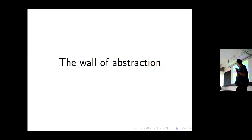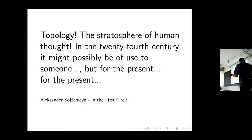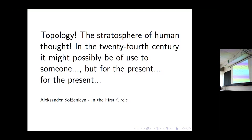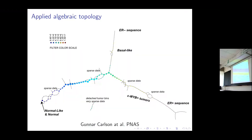I think I need to speak for a few more minutes. When you speak to an applied person, you need to cross a few walls. The first of them is the wall of abstraction. I'm not saying it's not necessary — it is by all means necessary — but we need to communicate. There is the standard quote from Solzhenitsyn, who besides being a famous writer who spent much of his life in the Soviet Gulag, was also a mathematician and topologist. Even topologists back in the 1920s hadn't considered topology to be very applied.